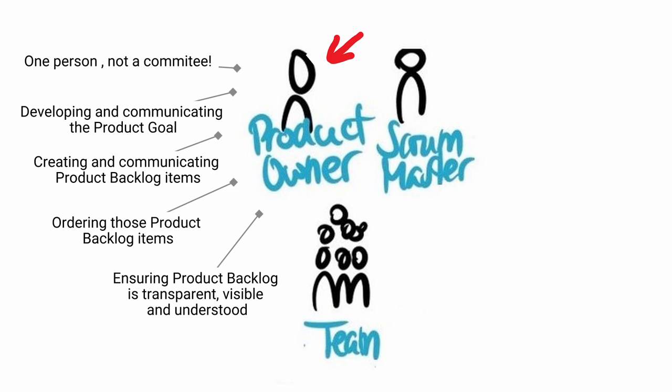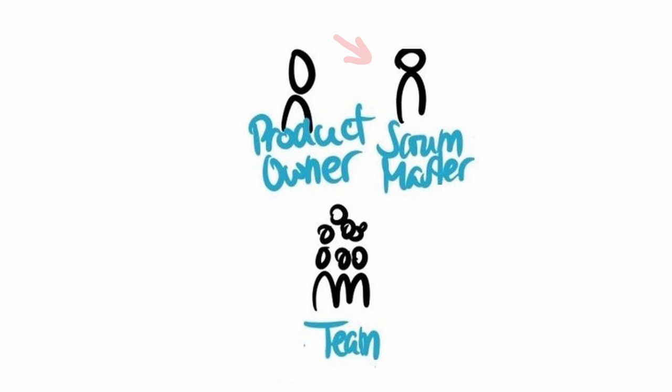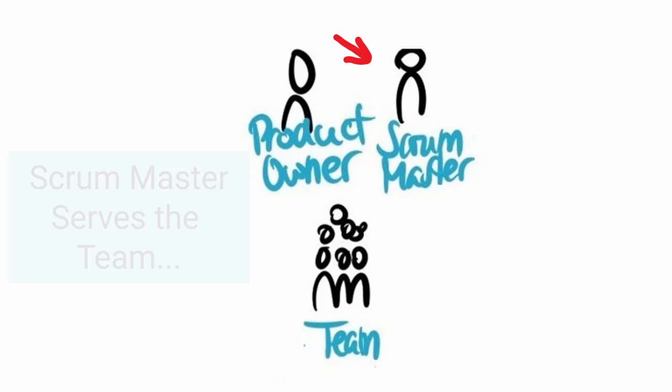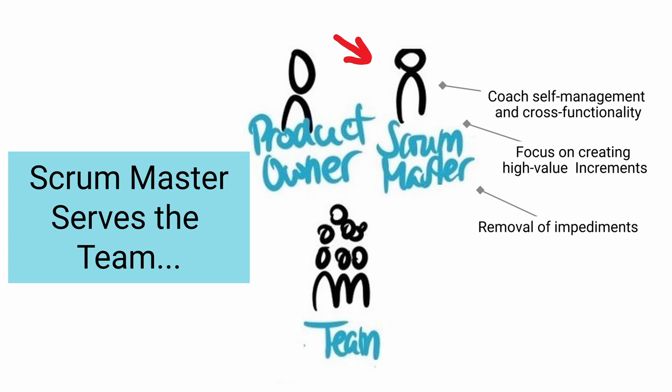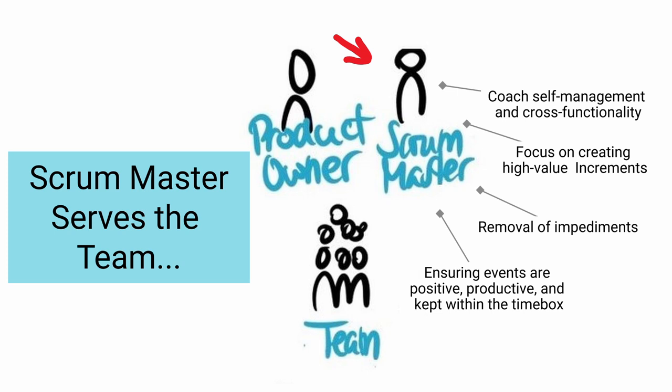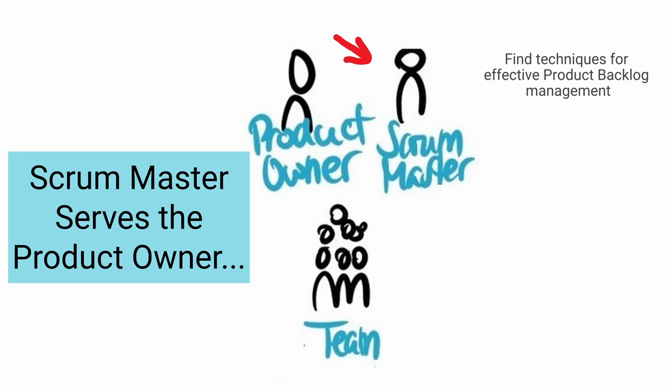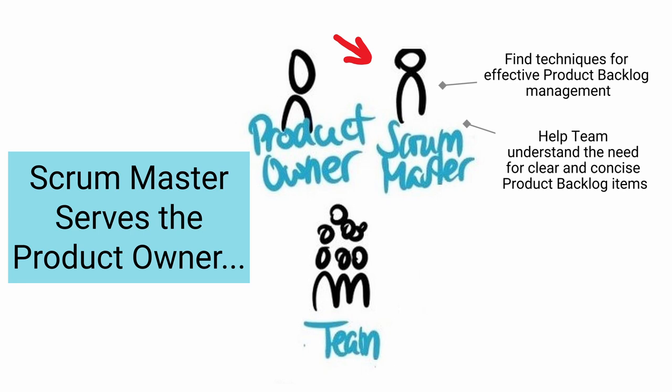Scrum Master. The Scrum Master is accountable for establishing and defending the Scrum process. They do this by helping everyone understand the theory and improve their practice. The Scrum Master serves the team by coaching members in self-management and cross-functionality, helping the team focus on creating high-value increments, removing impediments to the team's progress, and ensuring that all events take place, are positive, productive and kept within the time box. They also serve the product owner by helping find techniques for effective product backlog management, helping the team understand the need for clear and concise product backlog items, helping establish empirical product planning for a complex environment, and facilitating stakeholder collaboration as requested or needed.